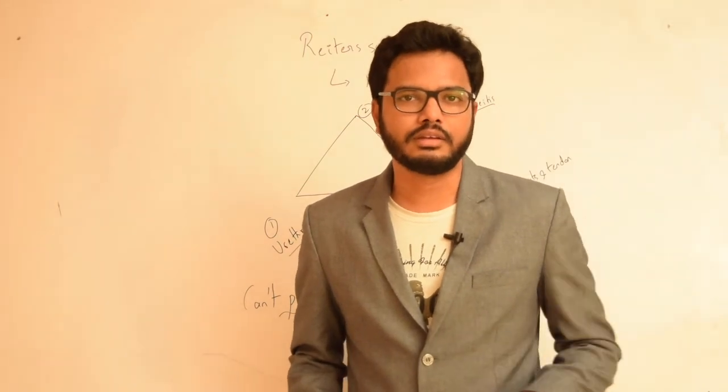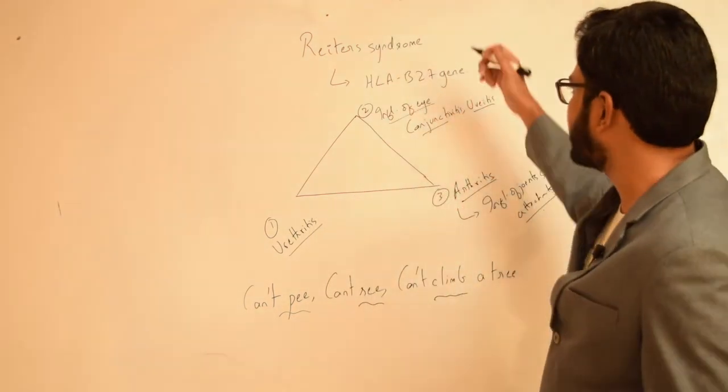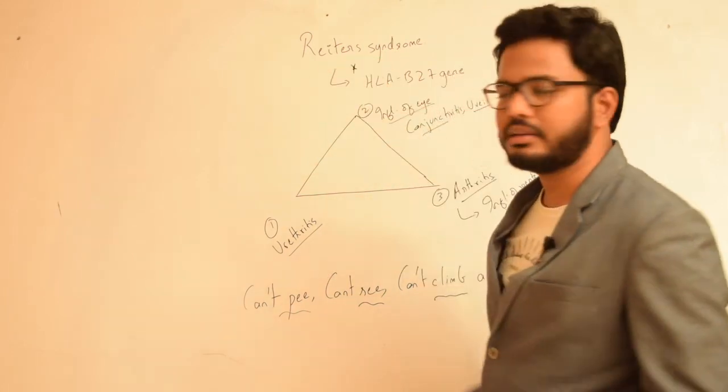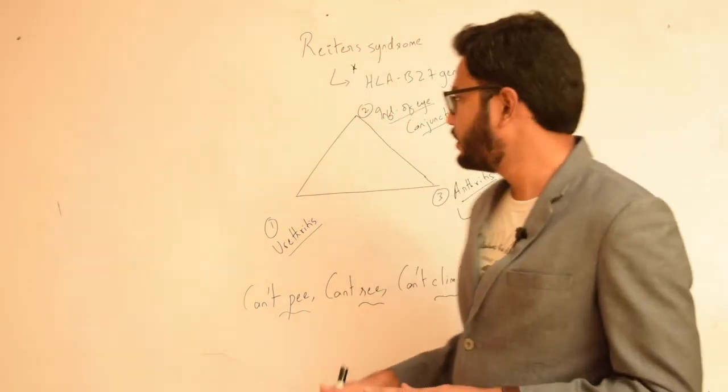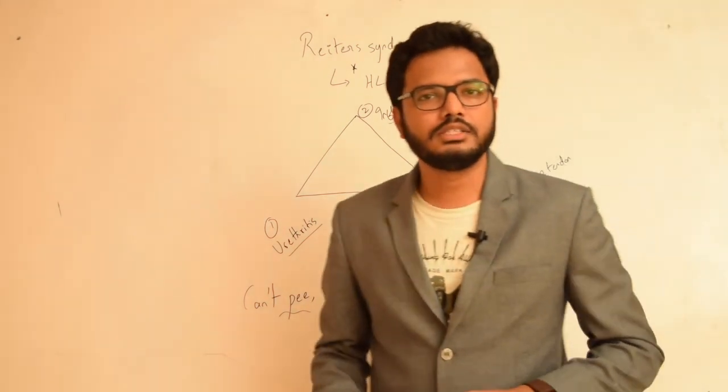So this is about Reiter syndrome. It's a form of reactive arthritis because of bacterial infection and the most commonly associated gene is HLA-B27 gene and we have the following symptoms: urethritis, arthritis as well as conjunctivitis.